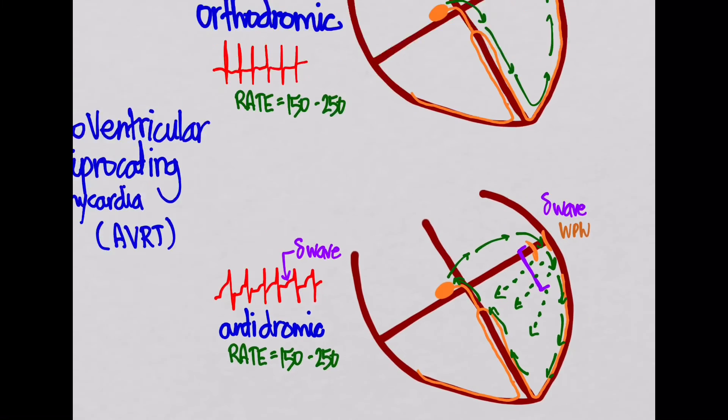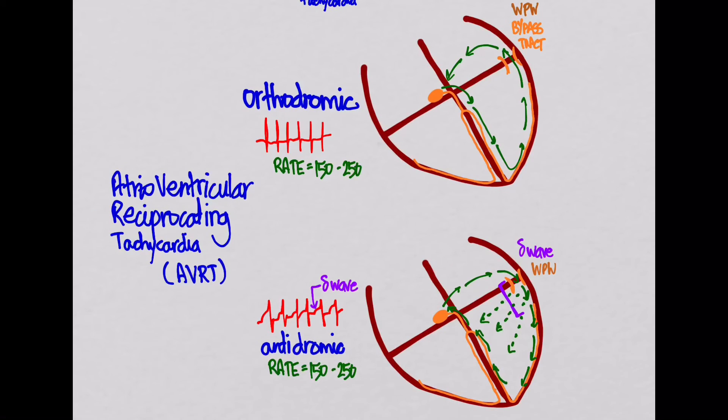Then we should also ask, what does adenosine do here? And just like the other AVNRT, this adenosine here can terminate the tachycardia.